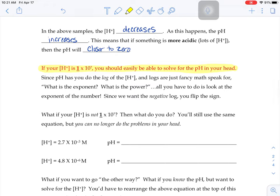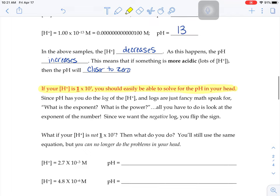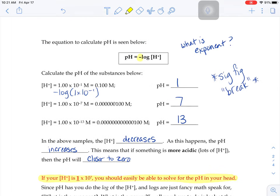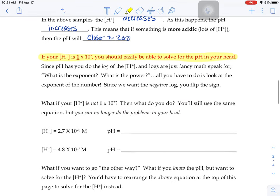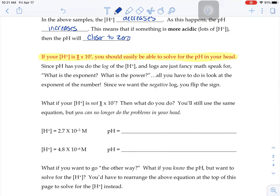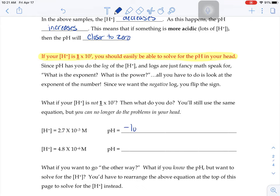But if your H+ concentration is not 1 times 10 to the something, you're still doing the same equation. You're still doing the log. You're still doing what's the exponent, but you just can't solve for it in your head anymore. So if I told you that the H+ concentration was 2.7 times 10 to the negative third molar, we would need to do the negative log of that number.